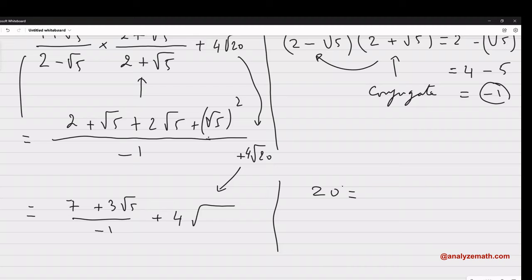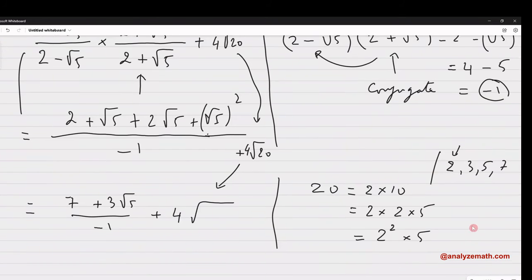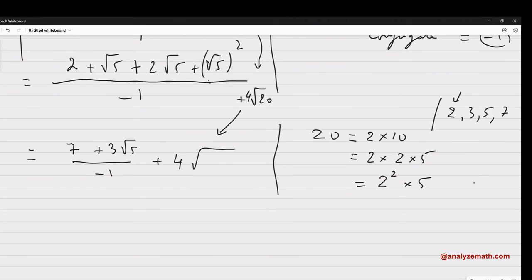20 can be written as, now we're going to use the prime numbers. Remember prime numbers, 2, 3, 5, 7. So, I'm going to write 20 as the product of these prime numbers. So, 20 is equal to 2 times 10. I start with the small one. And then, 10 is what? 10 is 2 times 5. And that's it. I stop. There is nothing else I can do here. But, it's a good thing, because I have got a perfect square. So, 20 is 2 power 2 multiplied by 5.